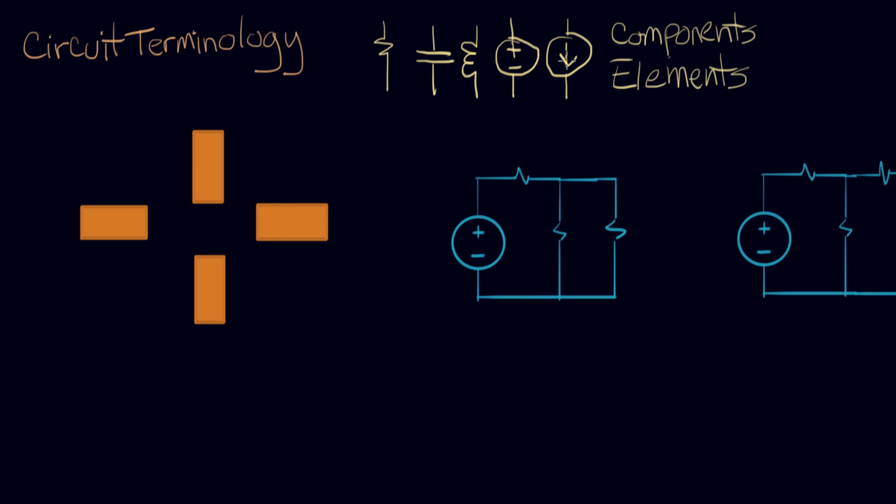Now we're gonna start assembling these things into circuits, and we need a few more words to talk about. Here's some circuit components that are laying out on the tabletop, and we're gonna connect those up with a wire. So for example, I could connect this one to this one with this yellow ideal wire, and an ideal wire has zero resistance, and it's perfect everywhere. And this forms a junction between these two components.